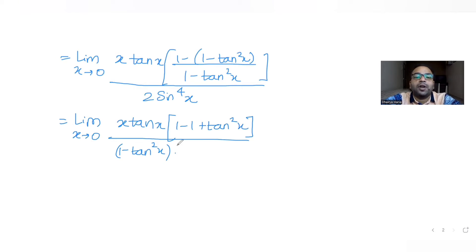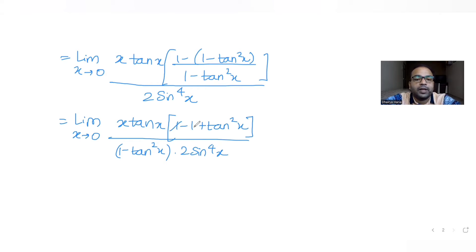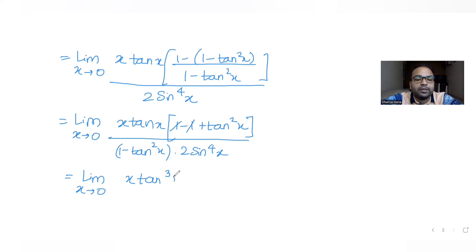So the denominator has (1 minus tan²(x)) and 2·sin⁴(x). The ones cancel, leaving limit x tends to 0 of x·tan(x)·tan²(x), which is x·tan³(x), all upon (1 minus tan²(x))·2·sin⁴(x).